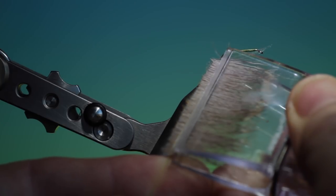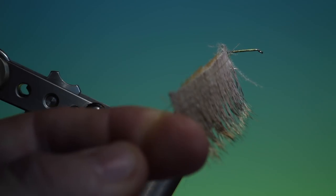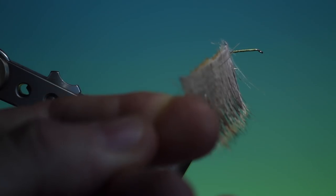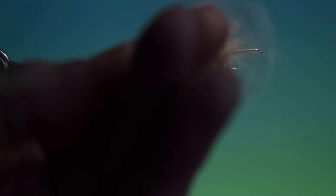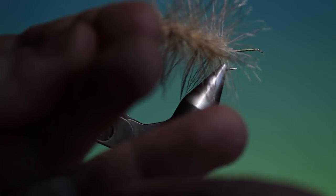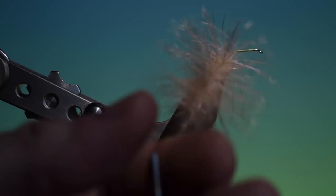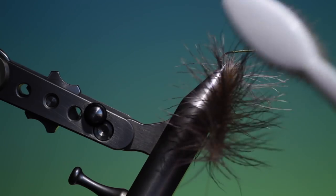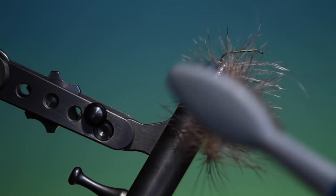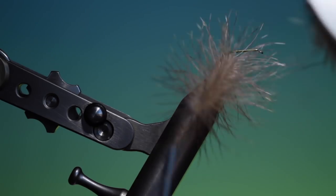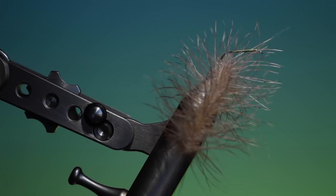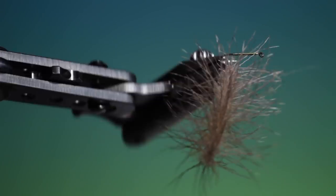Then we spin clockwise, and we can help it along for the first open spin. Spin it again. There we are, you can see the CDC and the deer hair have mixed nicely there. You can just give it a brush to release any trapped fibers, any loose fibers.